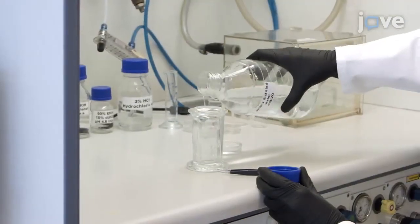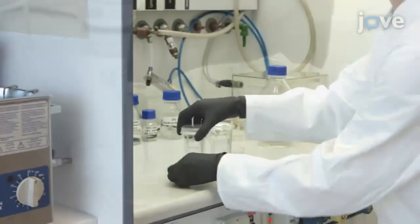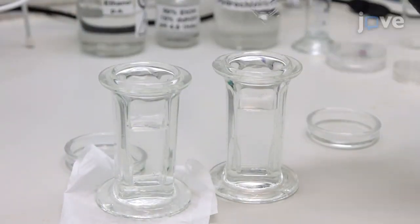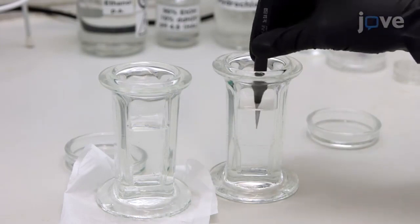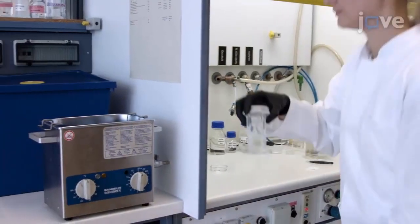After this, replace the hydrochloric acid in the staining jar with doubly distilled water, making sure not to let the glass surface dry. Seal the jar with the lid and place it back in the ultrasonic bath for another 10 minutes.